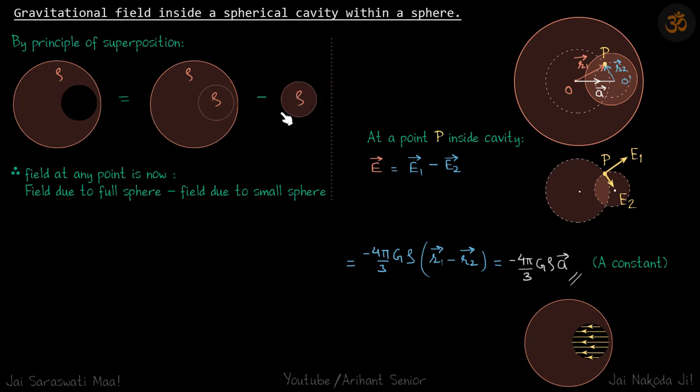This is our approach. If we take the point inside the cavity, let's say that point is P. Point P is at a distance r1 from the big sphere and it's at a distance r2 from the cavity's center.